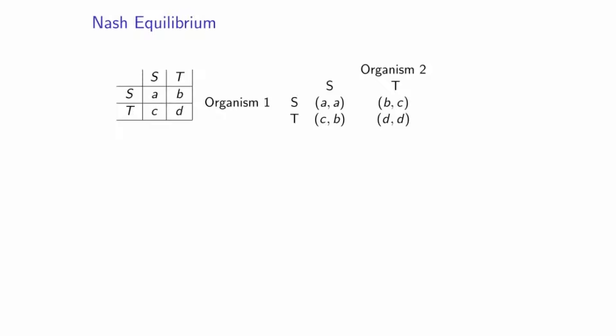We are getting used to the representation of payoffs in a theoretical game using a payoff matrix, which may be in one of these two forms. It's a very good exercise for you to be able to write one form from the other. Here we're representing two strategies denoted by the letter S and the letter T, and the payoffs are represented in a general form with values A, B, C, and D.